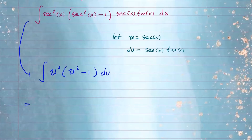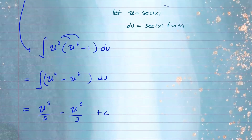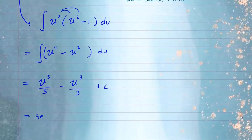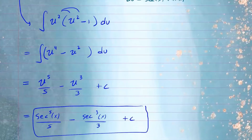This can be integrated using the power rule. Let's distribute first: this is the integral of u to the fourth minus u squared du. Applying the power rule gives us u to the fifth over five minus u to the third over three plus C. Now let's substitute back — u is secant — so our final answer is secant to the fifth of x over five minus secant to the third of x over three plus C.